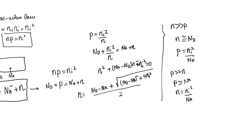When do we use these approximate relationships? We use them most of the time. However, the exact solution is useful in one specific case: when electrons and holes from thermal generation are significant. The approximate relationships are useful when electrons and holes from doping are dominant. So at high temperature, where thermal generation is again effective, we have to use the exact solutions.